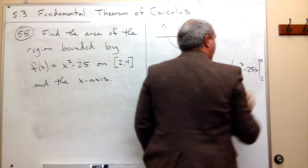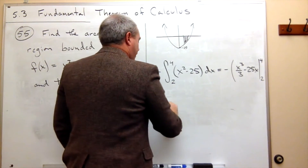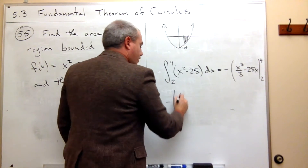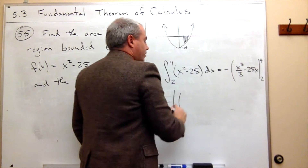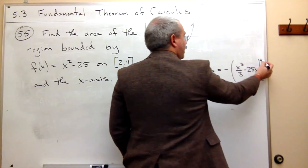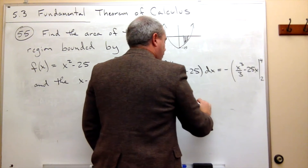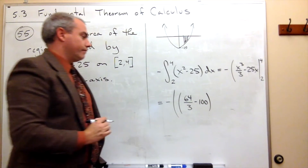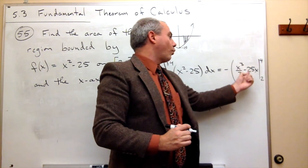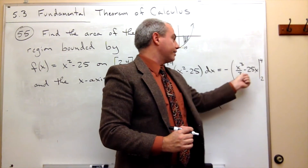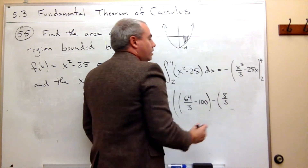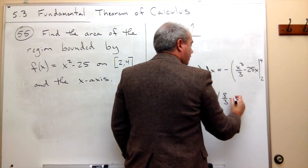So let's rewrite that. I've got a negative. Now I'm going to plug in 4 first. If I plug in 4, I get 4 cubed, which is 64 over 3, minus 4 times 25, which is minus 100. The Fundamental Theorem says I plug in the 4, and then I subtract plugging in the 2. So I plug in the 2 and I get 8 thirds, and then I get minus 50.